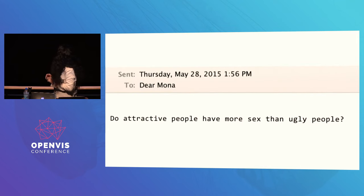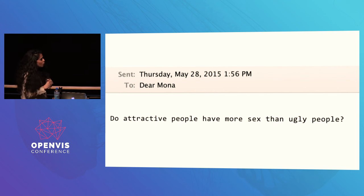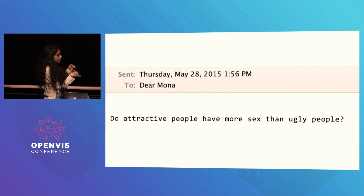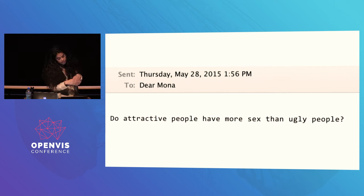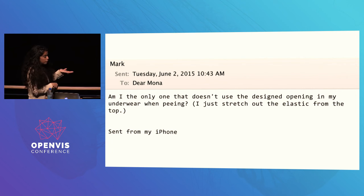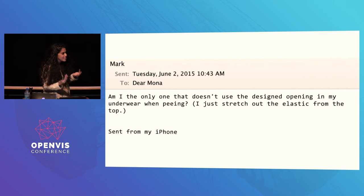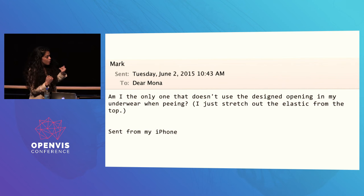One question sent to me in 2015: 'Do attractive people have more sex than ugly people?' I think it's interesting because I could quite easily imagine throwing a blog post together that did really well, with people just accepting that data at face value without any interrogation of what exactly is meant by 'attractive' and 'ugly.' Taking a step back and explaining definitions and methodology is super important. Here's another one: 'Am I the only one that doesn't use the designed opening in my underwear when peeing?' I assumed it came from a man. As someone who doesn't own a penis, I didn't think this question was interesting at all. But when I shared it on social media, a lot of people did think it was interesting — what I find interesting isn't necessarily the same as what the people I should be serving find interesting.